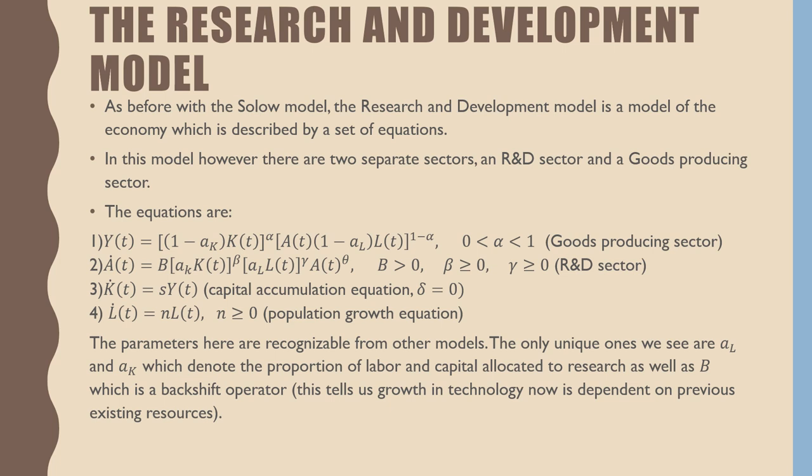And our fourth equation is our population growth equation where n is our population growth rate. The parameters in this model are recognizable from other models. The only unique ones that we see are a_L and a_K, which denote the proportion of labor and capital allocated to research, as well as B, which is a backshift operator. This tells us that growth in technology is now dependent on previously existing resources. It just means that instead of t, we do t minus one in all these equations—it's just one period before.